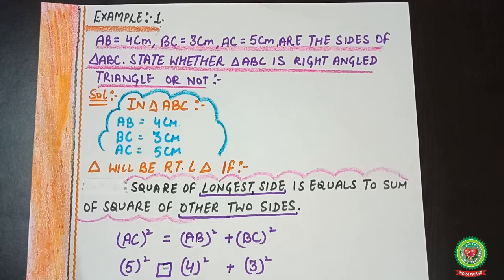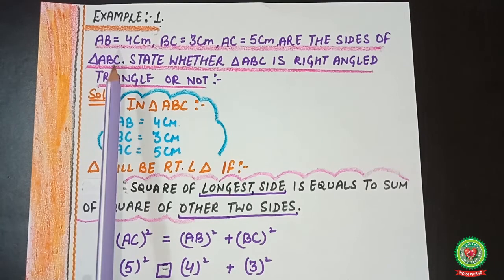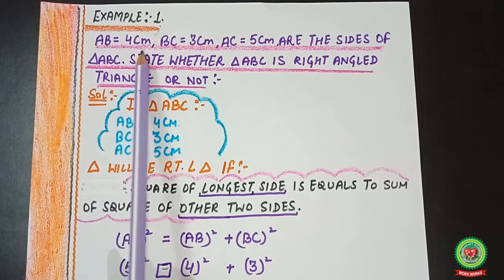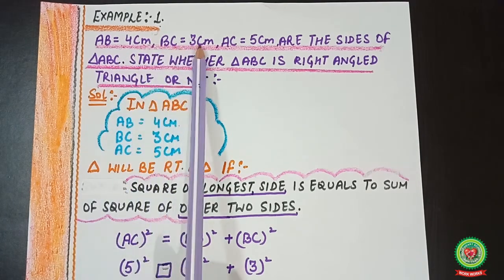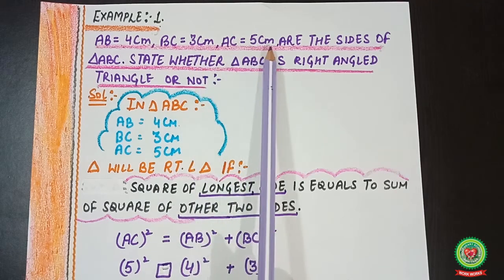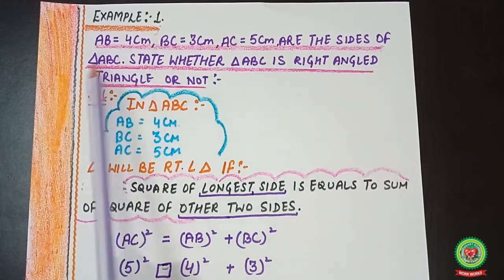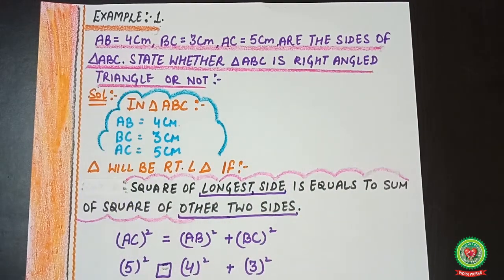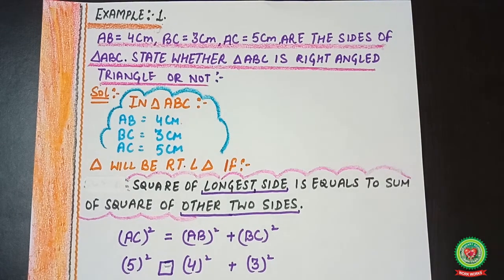Let's move to Example 1. Read the statement: AB = 4 cm, BC = 3 cm, AC = 5 cm are the sides of triangle ABC. State whether triangle ABC is a right angle triangle or not. We need to find whether the given sides form a right angle triangle.